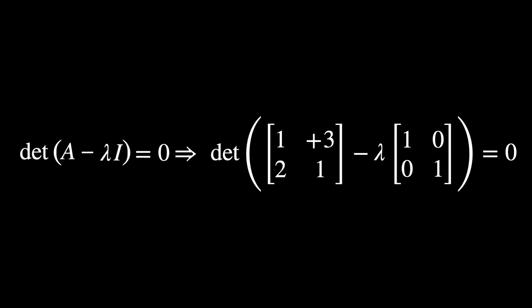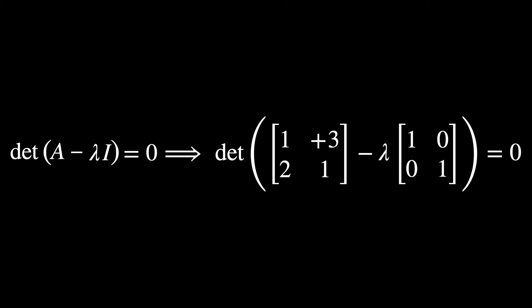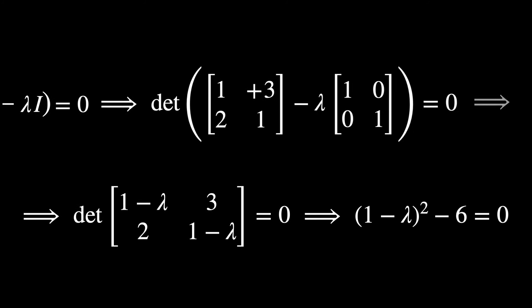So using this equation, we can expand these matrices. First, we need to multiply lambda by the identity matrix. Then we need to subtract them.